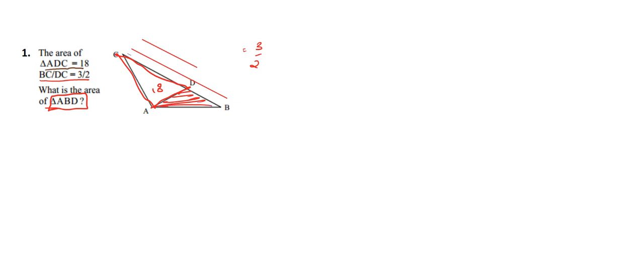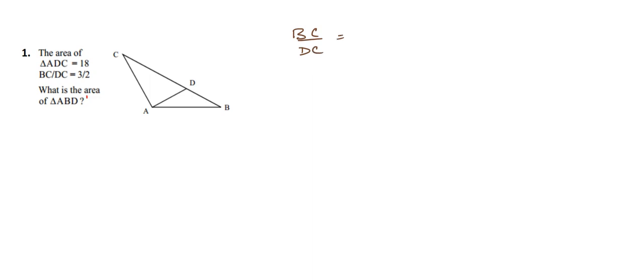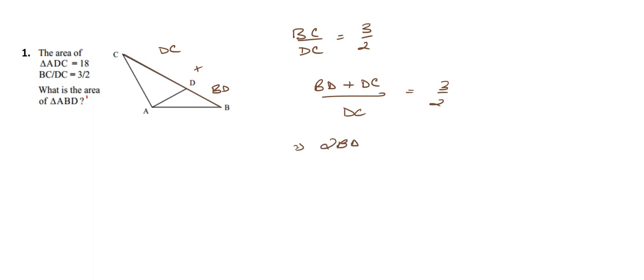We need to find the area of this triangle. Let us begin with the given data: BC by DC is equal to 3 by 2. In BC, from B to C, we can say that it is BD plus DC. So we can write BD plus DC, whole divided by DC, is equal to 3 by 2. Now cross-multiplying: 2BD plus 2DC equals 3DC.